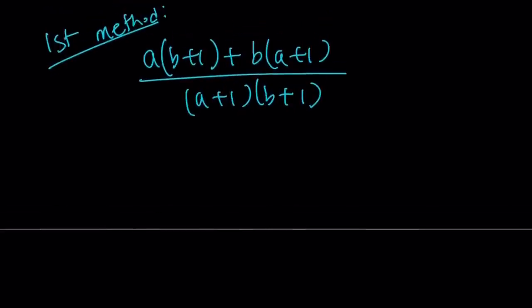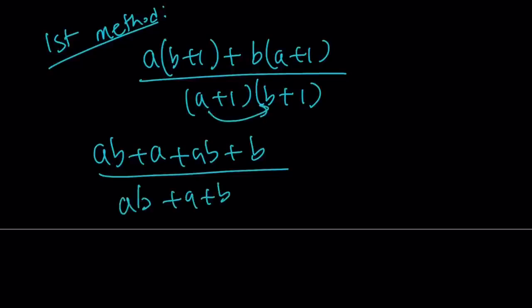So let's go ahead and distribute this and see what happens. ab plus a, plus ab, plus b. I just wrote the ba as ab, because it's commutative. We're dealing with the real numbers, right? Not just any arbitrary ring. Anyways, the bottom gives us ab, plus a, plus b, plus 1.